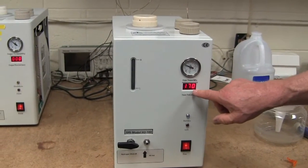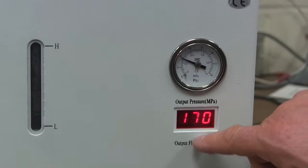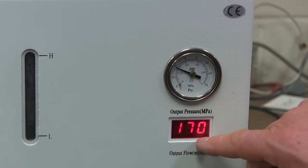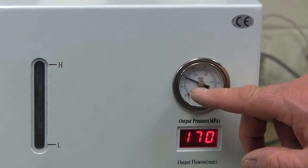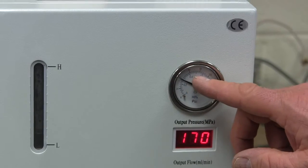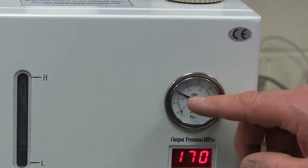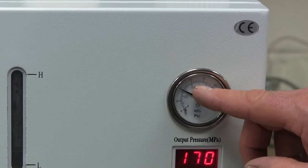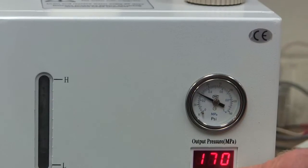So this display here on the front of the hydrogen generator shows how much hydrogen is being made. You can see it's 170, but as it gets close to the set point, the set point of the hydrogen generator is 60 psi. So they all pressurize up to 60 psi and then they stop. You'll see that when the needle gets closer to the 60 psi mark, this number drops to zero.